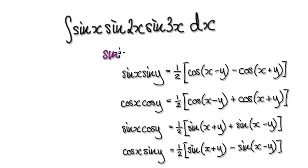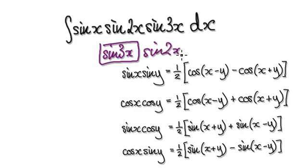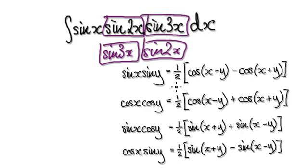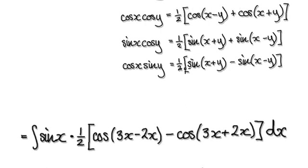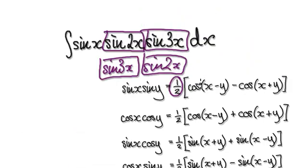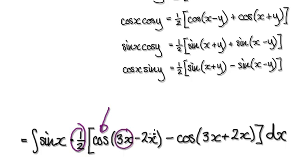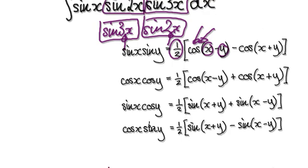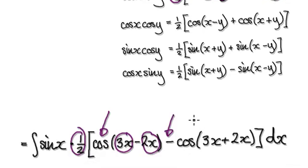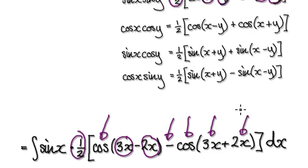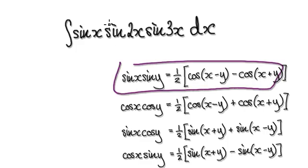We're going to break up this block and this block using the identity. Following the formula, that gives us a half. Then cosine of one angle take away the other angle — that's cos(3x − 2x). Then minus cosine of one angle plus the other angle — that's minus cos(3x + 2x).